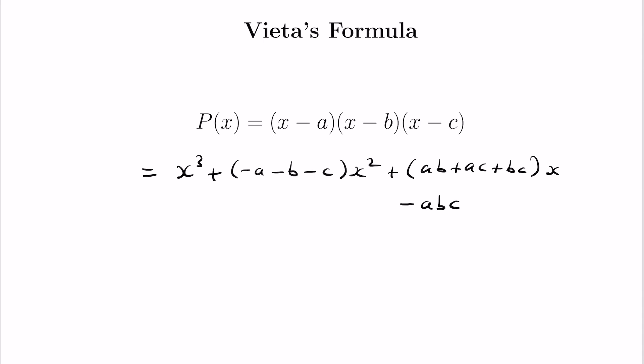And finally our last term, the constant coefficient, is negative abc. So we're seeing what comes to light here. The terms involve products of the roots where we start out with individual roots being added and then negated. Then we have sums of pairs and then we have the triple.